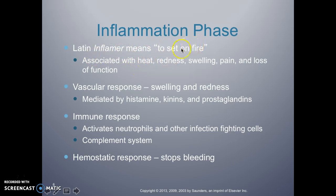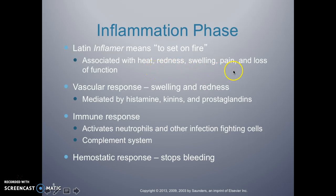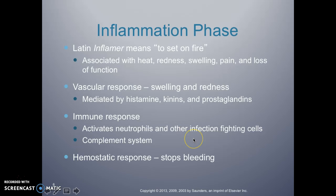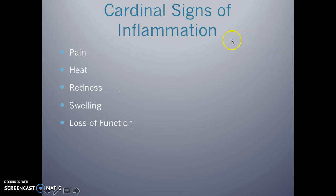The Latin word for inflammation means 'to set on fire,' which corresponds to the five cardinal signs of inflammation: heat, redness, swelling, pain, and loss of function. When something is hot, red, swollen, and painful, we obviously can't do the things we want to do. This is usually mediated by histamines and prostaglandins. Neutrophils and other infection-fighting cells come in and complement the system. The hemostatic response actually stops the bleeding. Those cardinal signs of inflammation are important for you to remember.